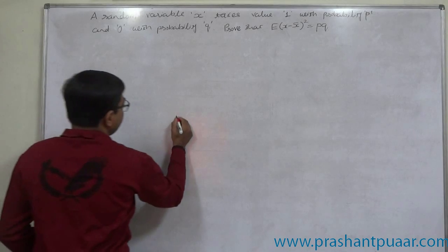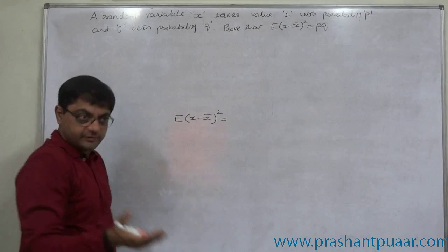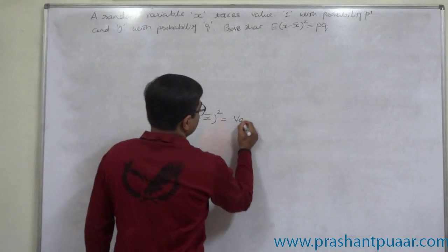First of all, what do we mean by E of X minus X bar whole square? We know that it is nothing but variance.